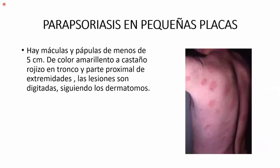También están las parapsoriasis en pequeñas placas. Hay máculas y pápulas de menos de 5 centímetros de diámetro, de color amarillento a castaño rojizo, en tronco y parte proximal de extremidades, o sea hasta el codo y la rodilla, como un traje de baño. Las lesiones son digitadas siguiendo los dermatótomos.